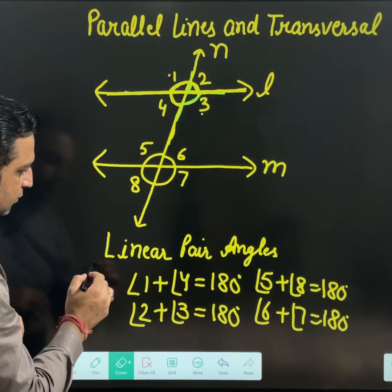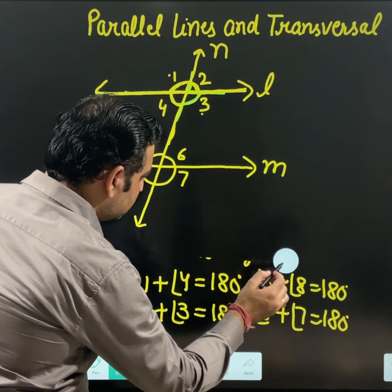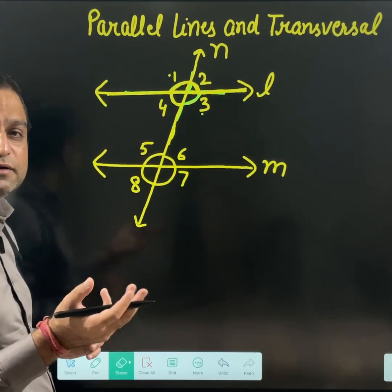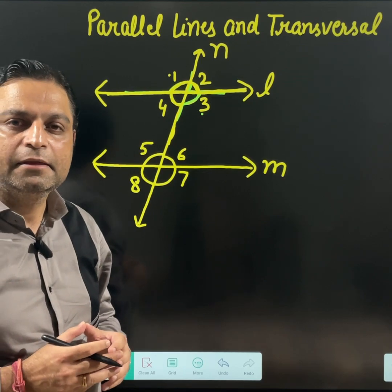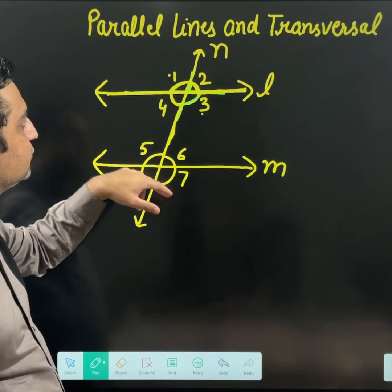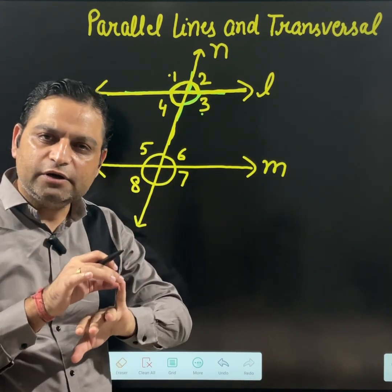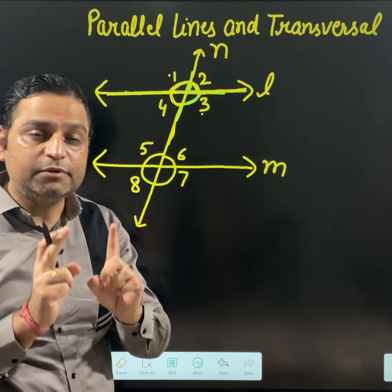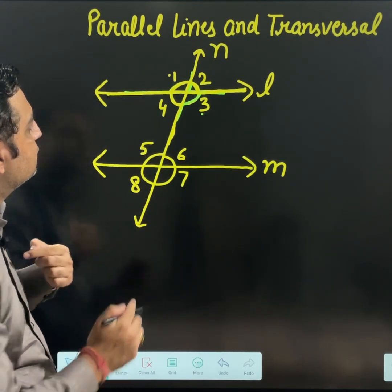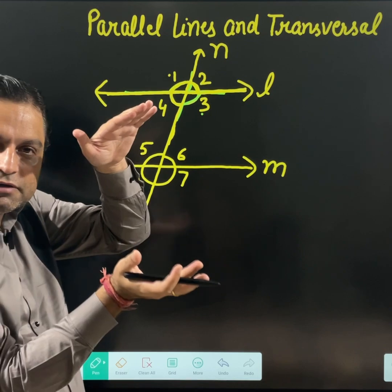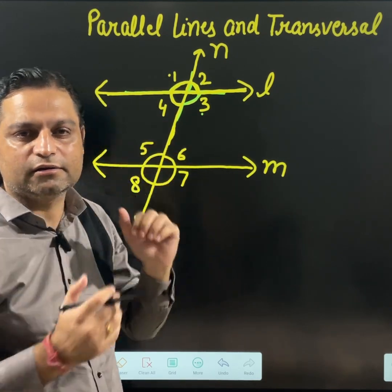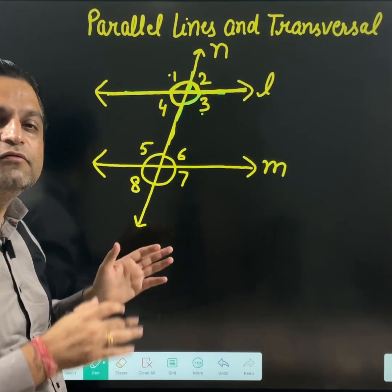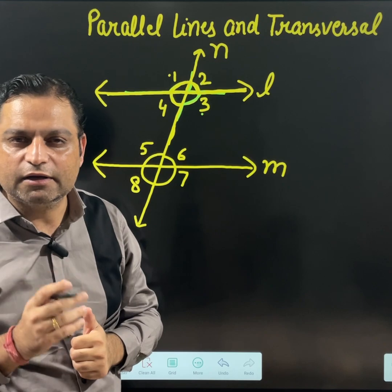Now, out of these 8 angles, there are interior angles and exterior angles. Angles 3, 4, 5, and 6 are coming between the parallel lines, so they are interior angles. Exterior angles are 1, 2, 7, and 8, which are coming outside the parallel lines.